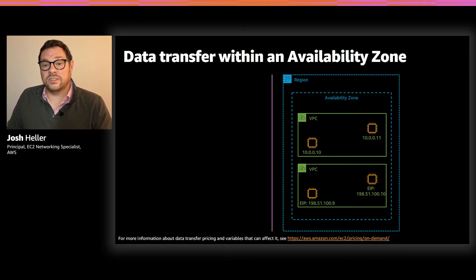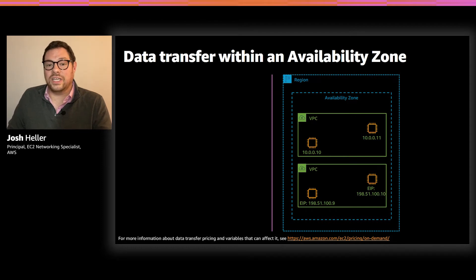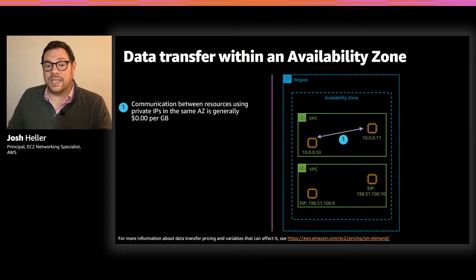VPCs are logical networks with one or more subnets, a routing table, etc. In the first VPC on top, we have two EC2 instances, each with a private IP address. The VPC on the bottom also has a couple of EC2 instances, but those instances are using elastic IP or public IP addresses. When we see the two instances in that top VPC communicating with each other, we call this intra-AZ data transfer. Within a single AZ, between two instances in the same VPC using private IP addresses, there's no charge for that.